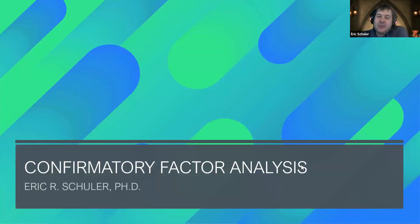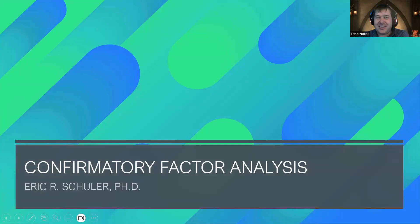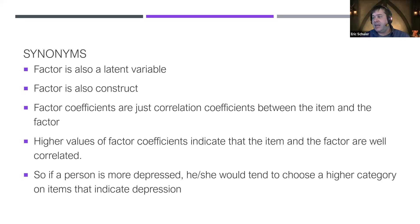Confirmatory factor analysis is just another tool for the tool belt — a way for us to provide a measure on something that we can't actually directly measure. Some acronyms and synonyms to think through: a factor is also a latent variable, a factor is a construct — these are all interchangeable. I'll tend to mostly use 'latent variable' to differentiate from exploratory factor analysis.